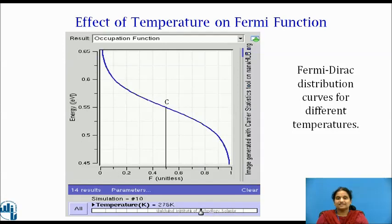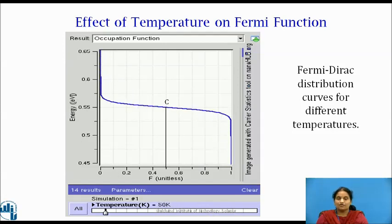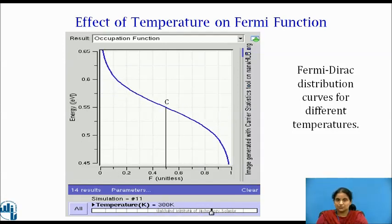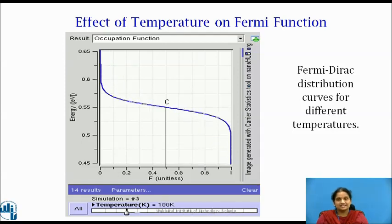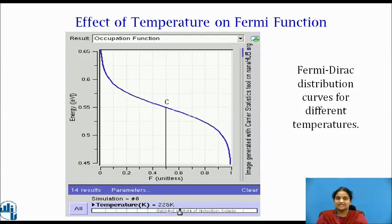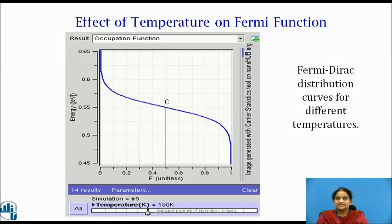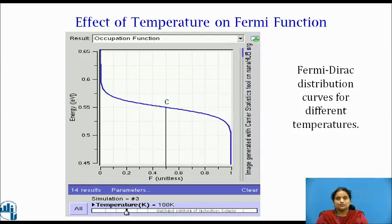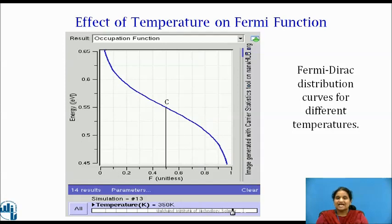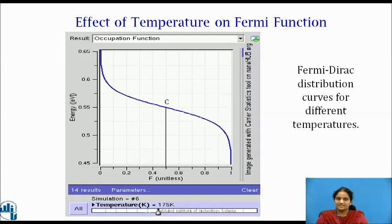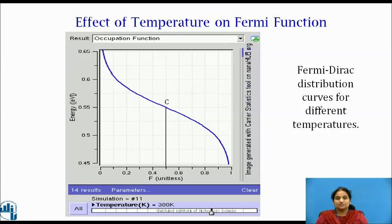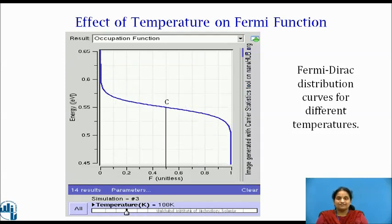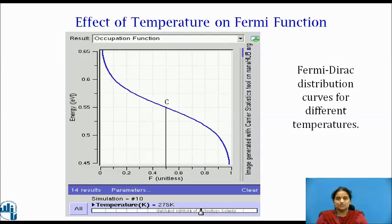The Fermi-Dirac distribution curves for different temperatures are shown in the figure. At T = 0 Kelvin, there is an abrupt jump in the value of F(E) from 1 to 0 at E_F, and when temperature is greater than zero Kelvin, the change is gradual. The higher the temperature, the more gradual is the change. It is seen from the curves for different temperatures that they all pass through a crossover point C at which the probability of occupancy is 0.5, since F(E) has a value of 0.5 for any temperature greater than zero Kelvin.